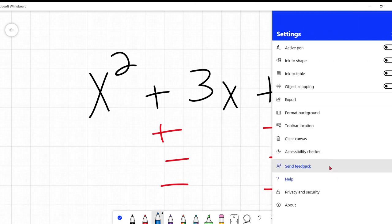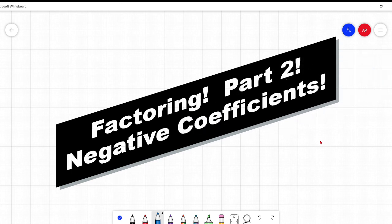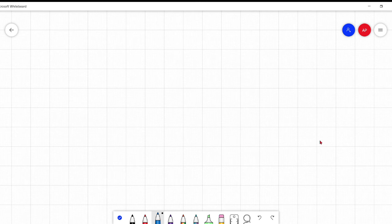So okay, for this one, we'll call this factoring part 2 with negatives, the sequel, we keep going. All right, so this one today is when we have a negative in front of the x squared.